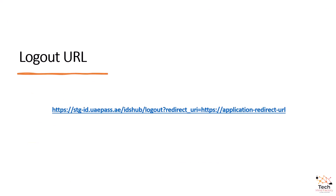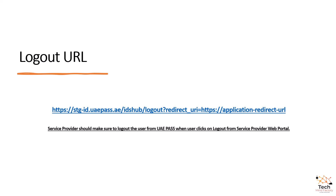One last important detail is about logout. UAE Pass provides a logout URL, so it's not enough to terminate the session on the application side by simply deleting the access token. The user should be redirected to the logout URL provided by UAE Pass. The service provider must make sure to log out the user from UAE Pass when the user clicks the logout button from the service provider web portal. When you implement UAE Pass authentication, please remember to also use the logout URL.